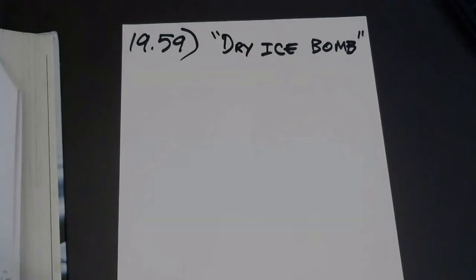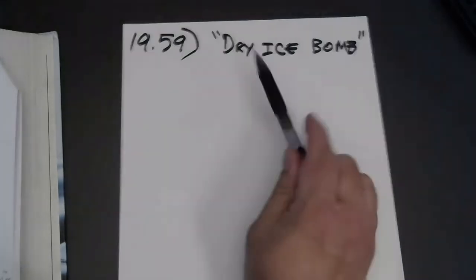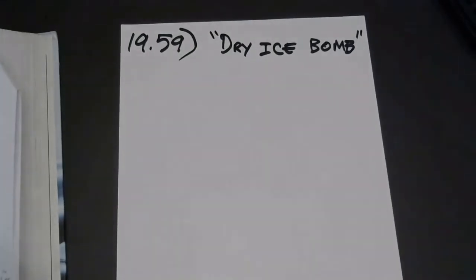Let's take a look at arguably the most difficult problem from your Chapter 19 homework. This is number 59. I like to call it the dry ice bomb problem, even though it's really not about dry ice. Dry ice, of course, is solid carbon dioxide, which sublimates into gaseous CO2 at atmospheric pressure. But the problem is very similar to a dry ice bomb.